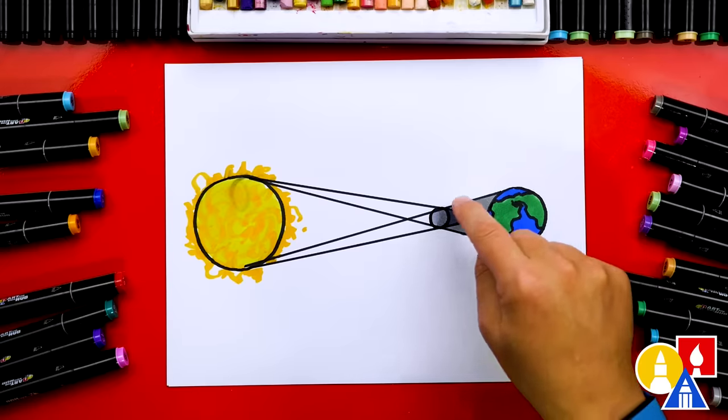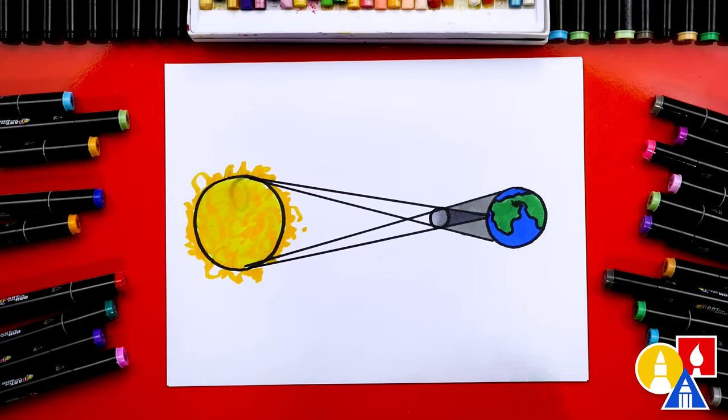I don't think I mentioned the darker shadow is called the umbra. So you have the penumbra for the outside or the partial shadow and then you have the darker shadow or the full eclipse or the full shadow. That's called the umbra.